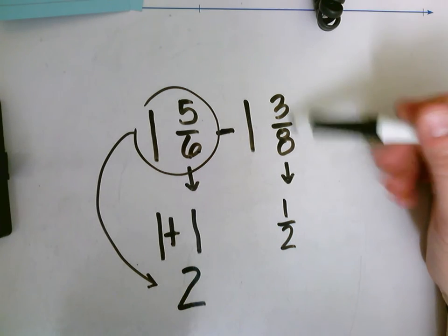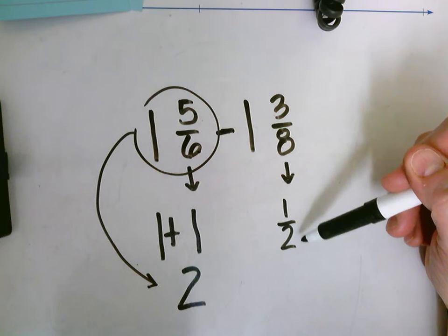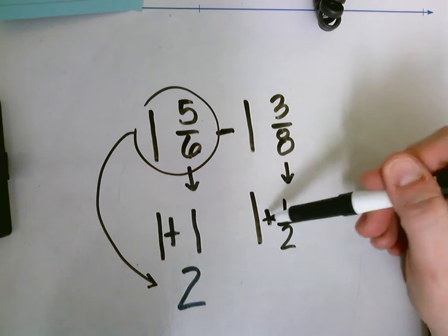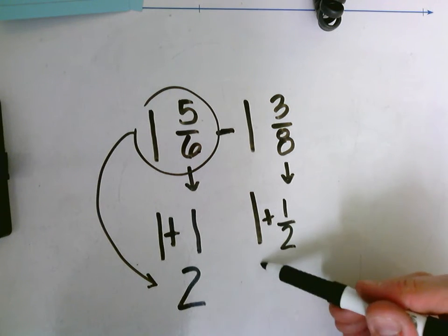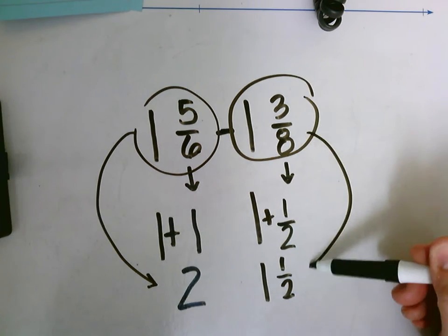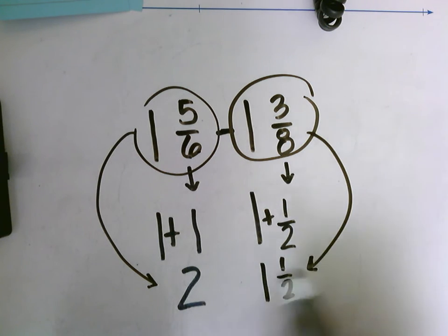So three eighths we can round that to our benchmark of one half. We have our one already, so one plus one half, that is one and a half. So one and three eighths we can round that to one and a half. Now my new problem: two minus one and a half.